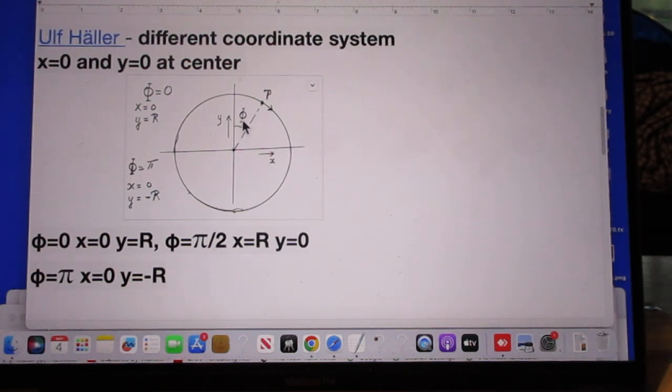He calls this angle capital phi, and so now when x is zero, then r, x is zero, then y is r, and phi is zero. So make phi zero, then you are here at the top, then x is zero, but y is r. If phi is 180 degrees, that means it's here, then x is again zero, but y is now minus r in his system.